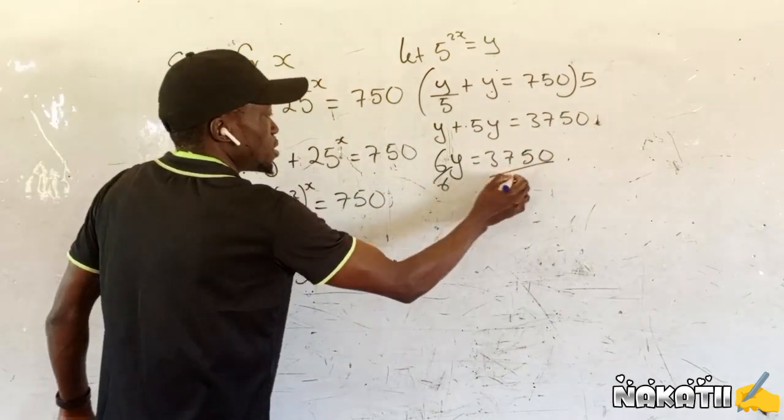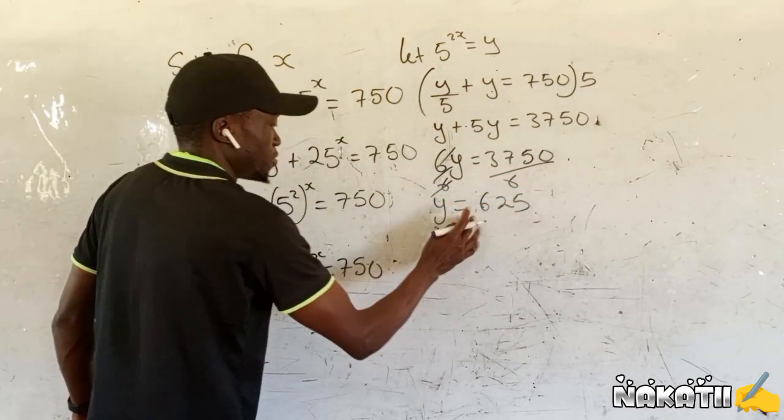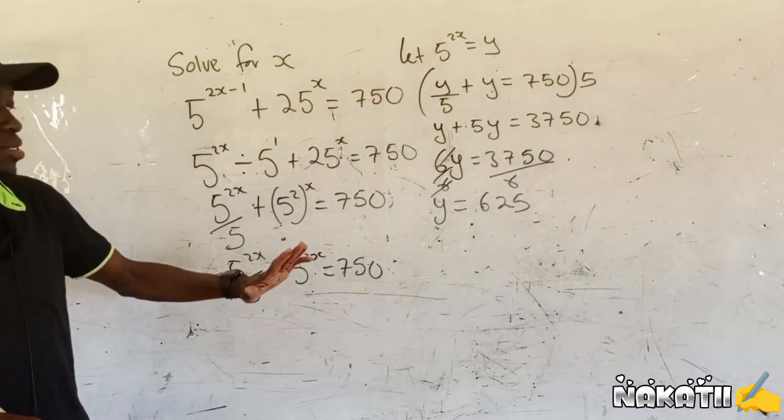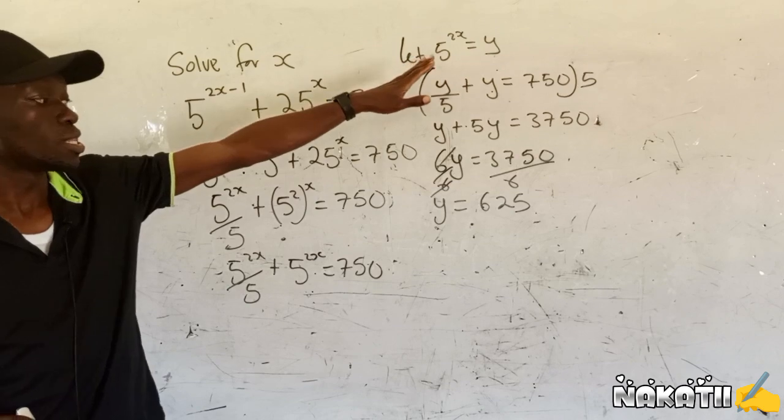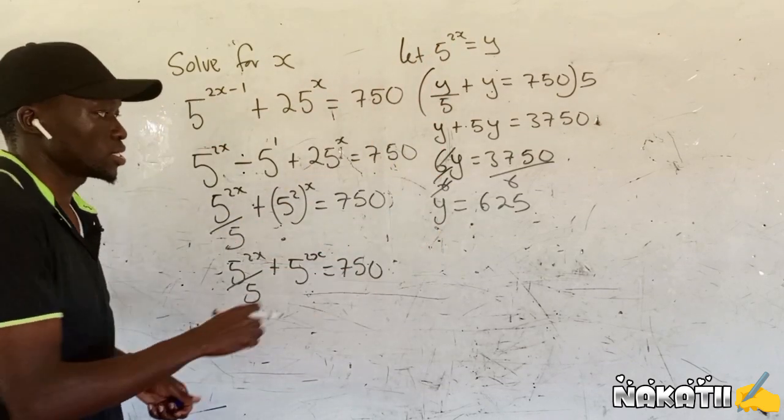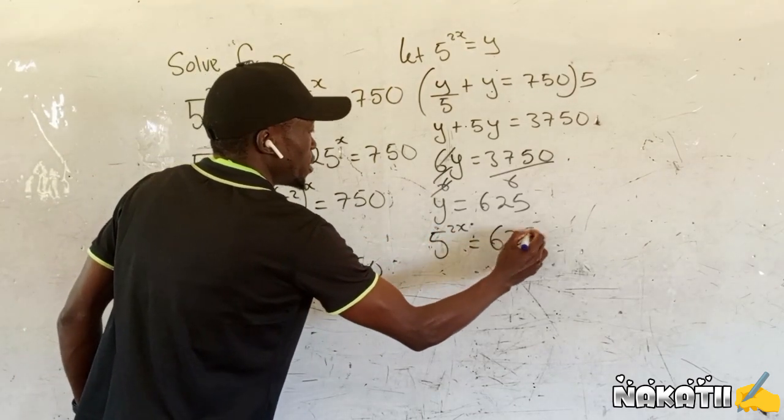Then if you divide everything by 6, you're going to have y equals 625. At this point, we go back where we said let 5^(2x) be y. Now we just come back here and say that 5^(2x) equals 625.